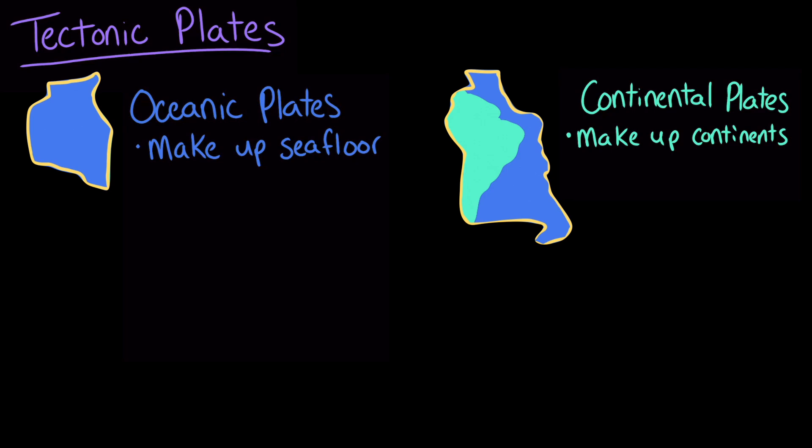The main difference between oceanic plates and continental plates is the type of crust found on each plate. Oceanic crust and continental crust are made out of different kinds of rock. The continental crust contains a lot of granite, which is an igneous rock that was once molten. The oceanic crust has a lot of basalt in it, which is another kind of igneous rock. The difference in the kinds of rock means that oceanic crust is denser than continental crust.